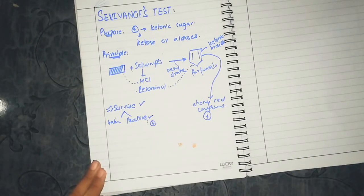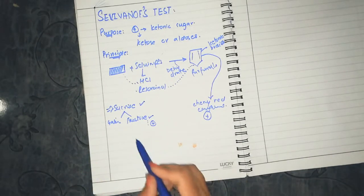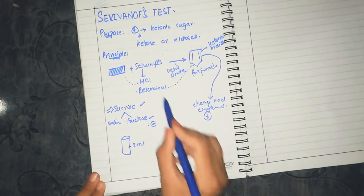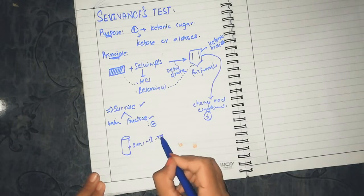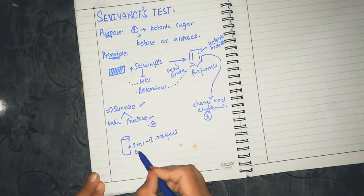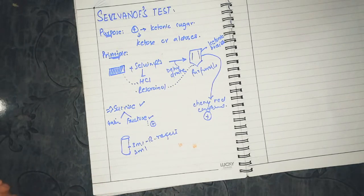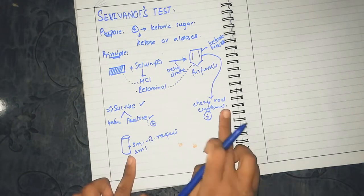The procedure is very simple. In a test tube, we take 3 ml of resorcinol reagent, then add 1 ml sample. We mix it, boil it, and observe. If you get a cherry red compound, the test is positive.